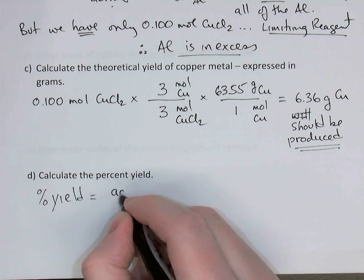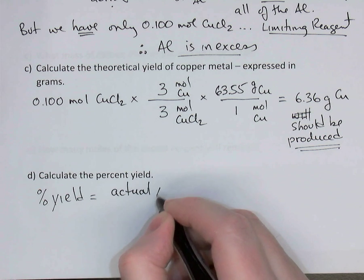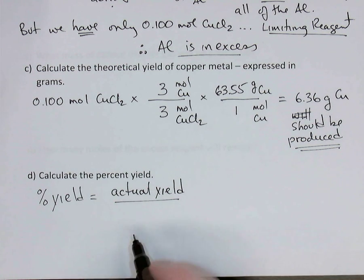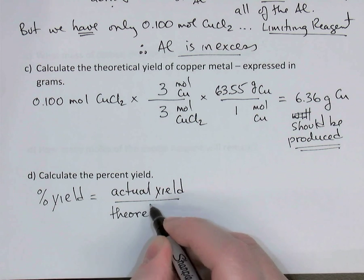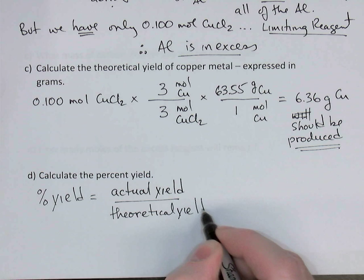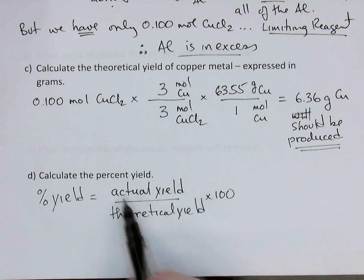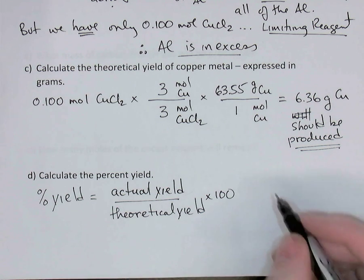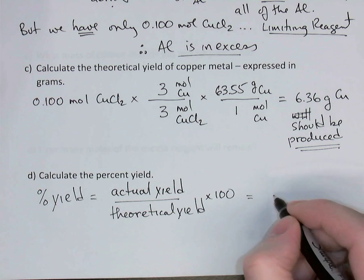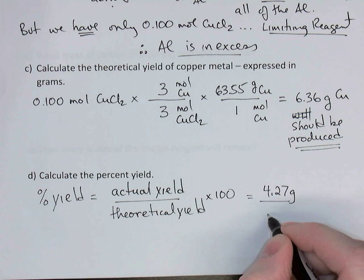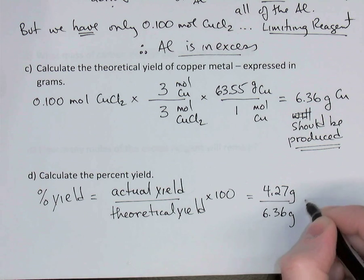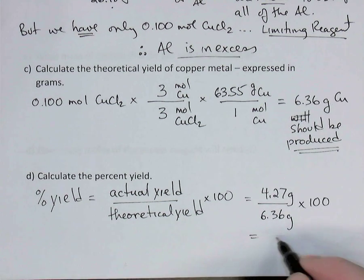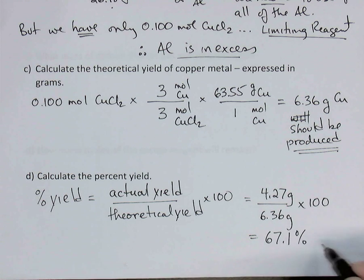In any of those situations we can calculate the percent yield. It's simply equal to the actual yield divided by the theoretical yield, multiplied by 100. Take what you actually got in the lab, divide by what you theoretically should have gotten, times 100. In this case, 4.27 grams ÷ 6.36 grams × 100 = 67.1% yield.